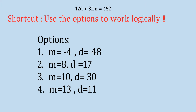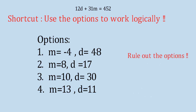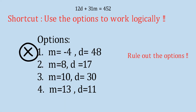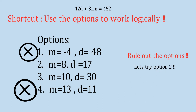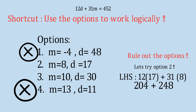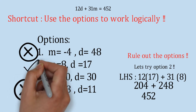We need to rule out invalid options. The first option has a negative month, so it is not possible. For the fourth option, the month cannot be 13 since there are only 12 months - also not possible. We consider the second and third options. Trying option 2 with M equals 8 and D equals 17: putting into the equation gives 204 plus 248 equals 452, which matches the right-hand side. So the second option is correct.